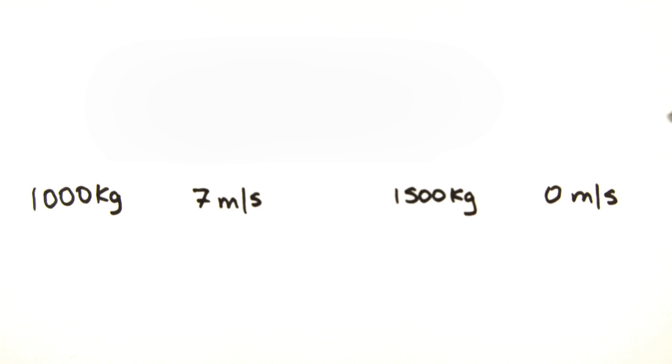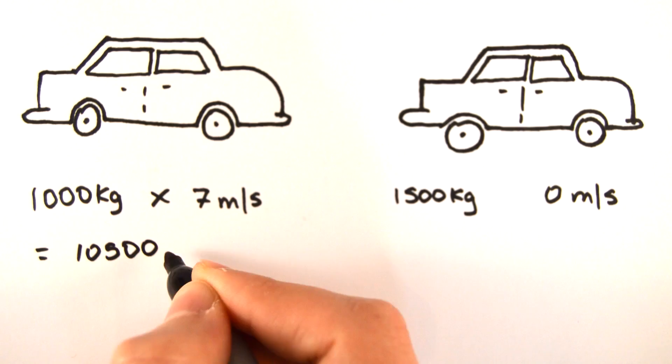Firstly we work out the momentum of each object individually, so the first car has a momentum of 10,500 kilogram meters per second, and the second car has a momentum of 0 kilogram meters per second.